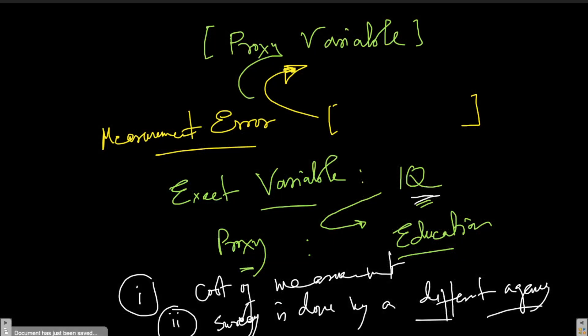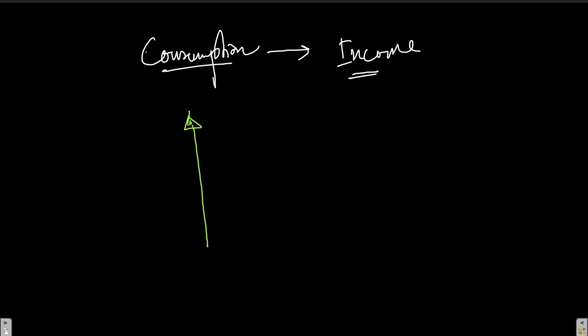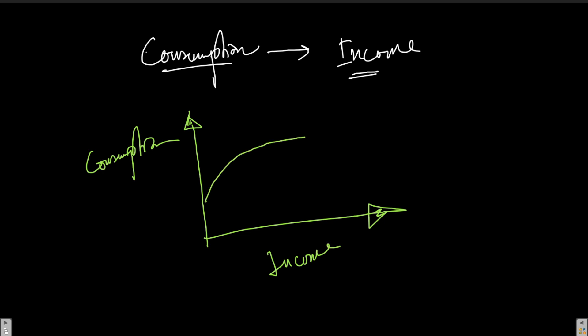Another common example is income and consumption. People often report their income data incorrectly, which is why we often use consumption information as a measure for income. Consumption cannot give you a perfectly clear picture of income, but it does tell some of the true picture. If I put consumption on the y-axis and income on the x-axis, consumption increases as income increases but at a decreasing rate. Because of this relationship, I can use consumption to get some idea about income.